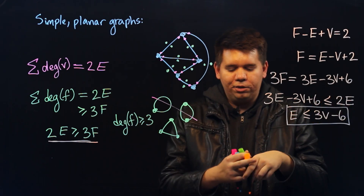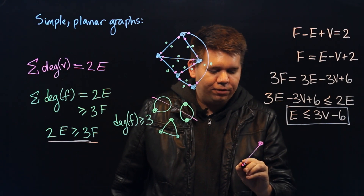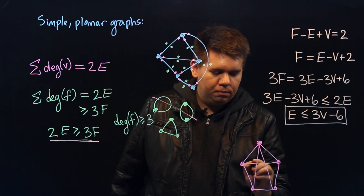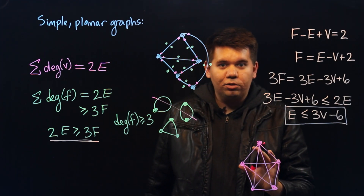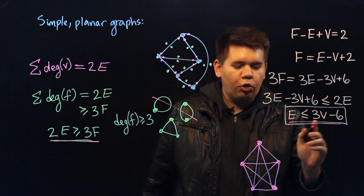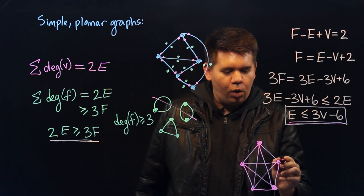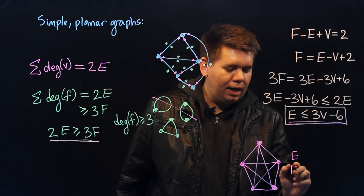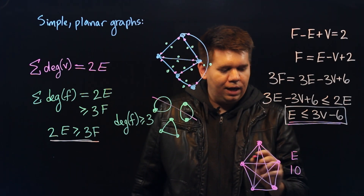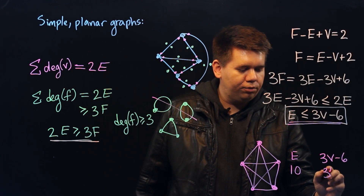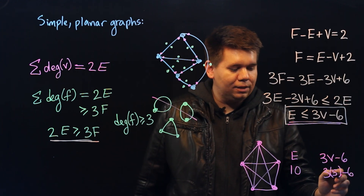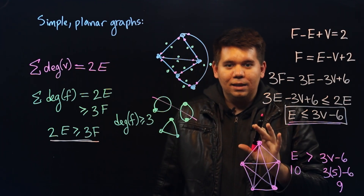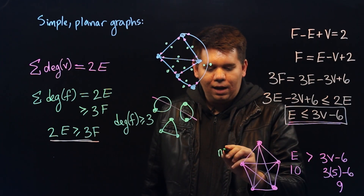Think of one of our canonical examples of a non-planar graph: K5, the complete graph on five vertices. Here we have five vertices and we connected them all with edges. And we saw that this graph was non-planar. Well, this inequality gives us a quick way to verify that. The number of edges in this graph: there are five along the outside and five on the inside, so there's a total of ten edges. How many vertices are there? Five. So three v minus six is three times five minus six, or fifteen minus six, which is nine. So our number of edges — ten — is greater than three v minus six — nine. This tells us this can't be a simple planar graph. And indeed, like we saw before, this is not a planar graph.